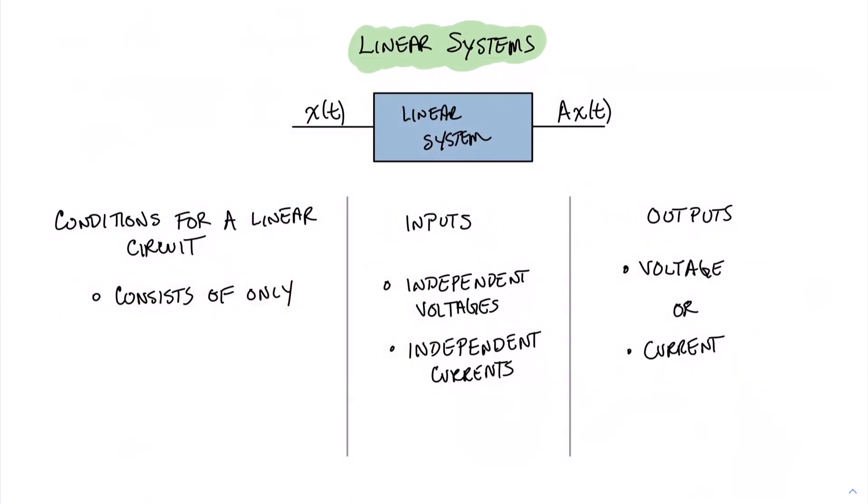The superposition principle relies on the concept of linear systems. In this case here, I have a linear system inside the box, which for our purposes would be some sort of resistive circuit with dependent and independent sources. And we have an input, we'll call it x of t, and then we have an output, which is some linear function of x of t. We can say that it's a times x of t.